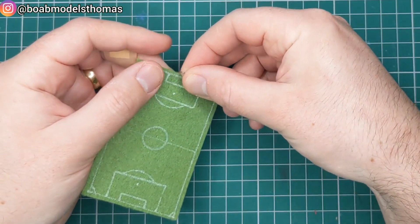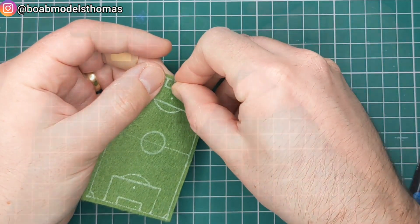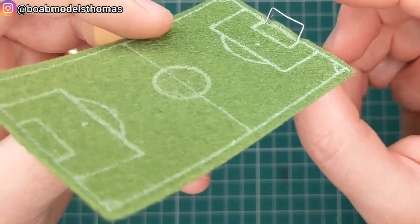Next, I used a staple for the goalposts, made little holes, and then once I was happy with the position, I put down some superglue.